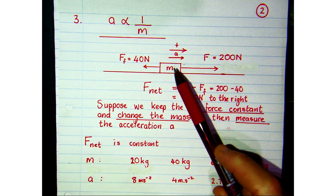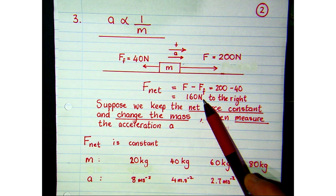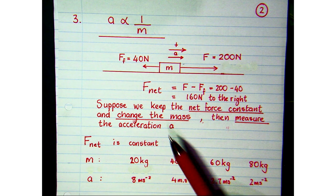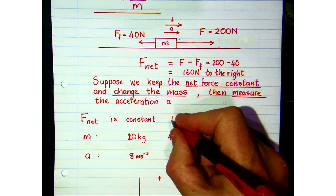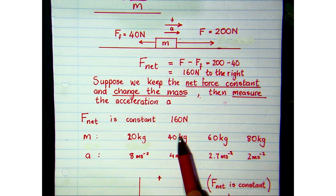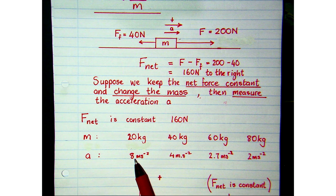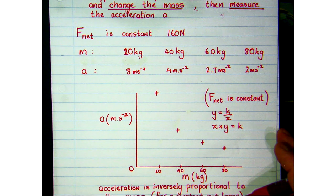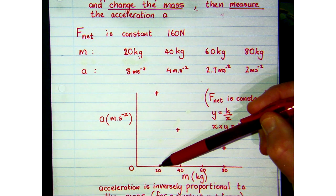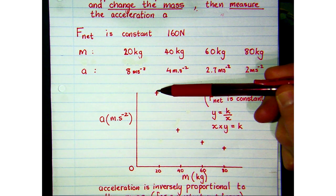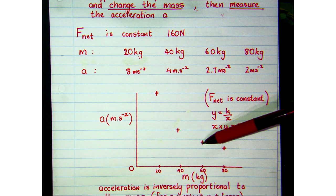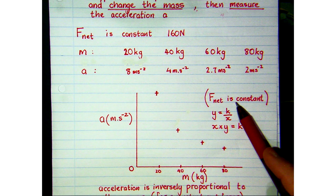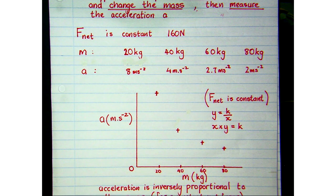We kept the net force constant at 160 newtons to the right, and in each test we changed the mass of the object and measured the corresponding acceleration. Applying a constant net force of 160 N to different masses, through experimentation the accelerations come out to different values. Plotting acceleration versus mass, as mass increases (20 kg, 40 kg, 60 kg...) the acceleration decreases, and the line of best fit is a curve.